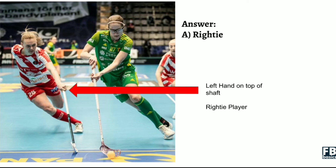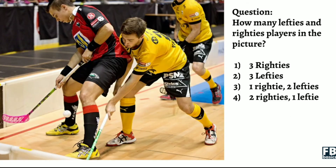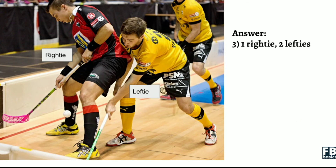Now the last question should be a lot more complicated. I'm asking how many lefties and how many righties are in the picture — including the yellow jersey player behind both players in front. So are there three righties, three lefties, one righty and two lefties, or two righties and one lefty? The answer is one righty and two lefties.